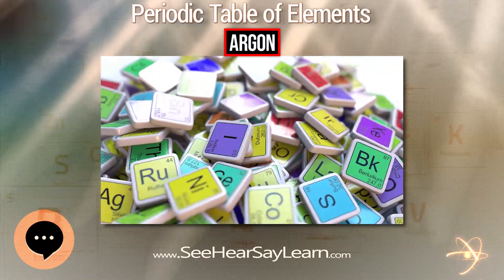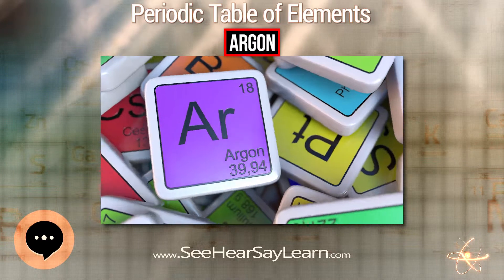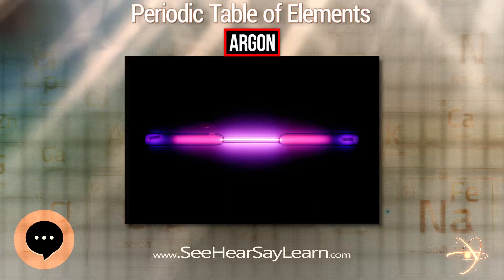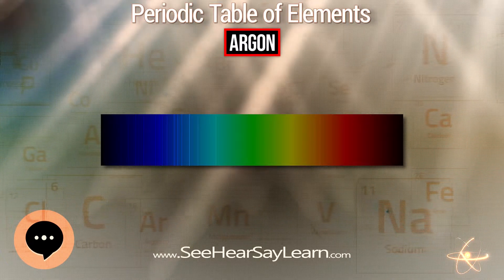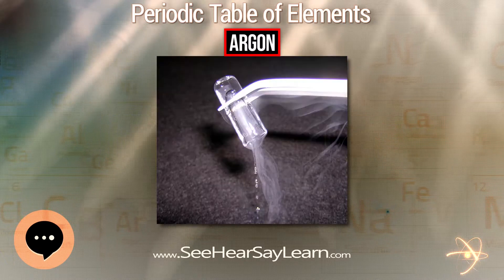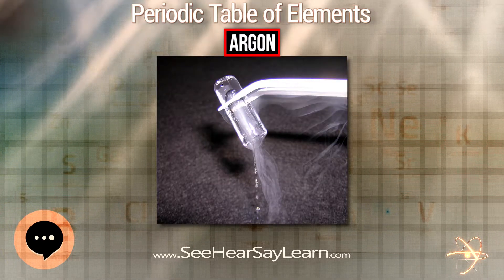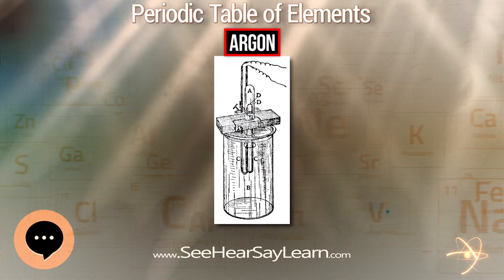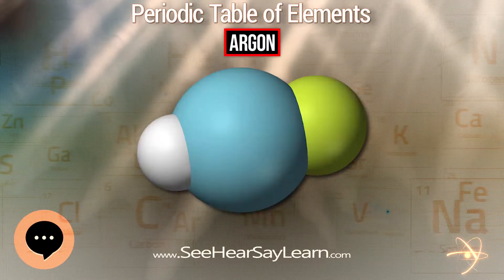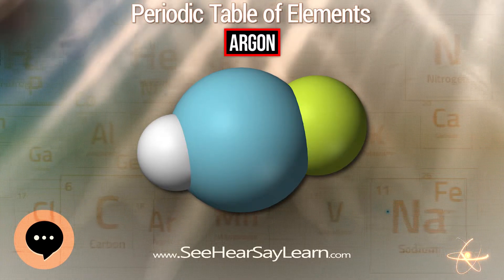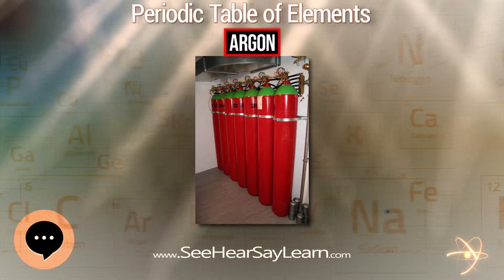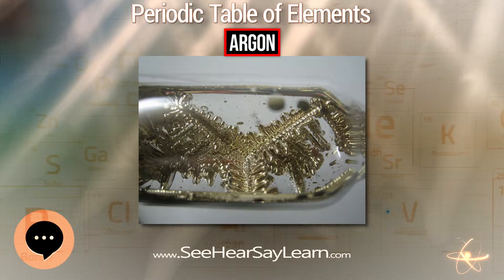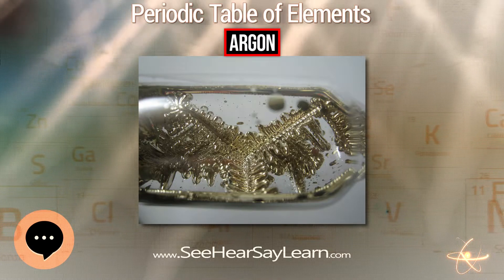Argon produced directly by stellar nucleosynthesis is dominated by the alpha process nuclide 36Ar. Correspondingly, solar argon contains 84.6% 36Ar, and the ratio of the three isotopes 36Ar : 38Ar : 40Ar in the atmospheres of the outer planets is 8400 : 1600 : 1. This contrasts with the low abundance of primordial 36Ar in Earth's atmosphere, which is only 31.5 ppm by volume.